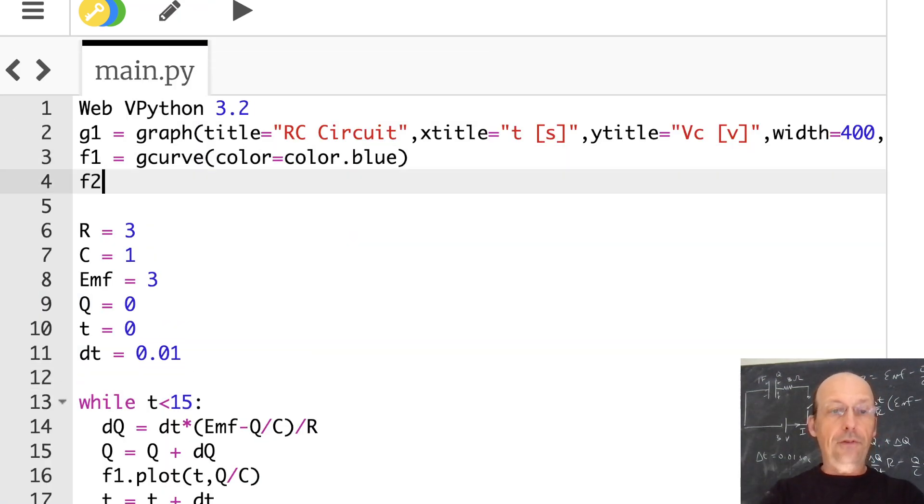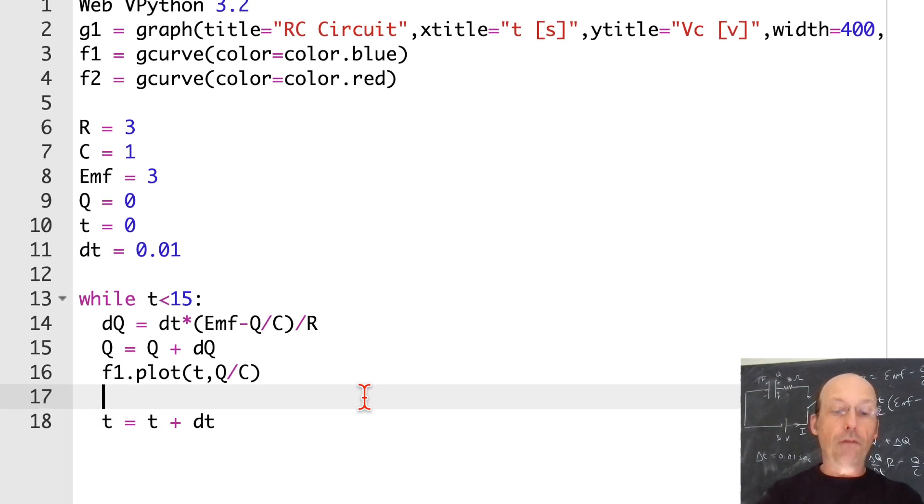F2 equals gcurve. Color equals color.red. Yeah, you can make two graphs. No problem right there. So I'm going to calculate VC. And this is going to be the theoretical VC. VC is going to be equal to, what is it? EMF. No. What did I say? It was EMF(1 - E^(-T/RC)). I don't know why I blanked out on that. That is right. And then as T gets very, very large, it goes to zero and it goes to EMF. That's right. Okay. And let's plot that. F2.plot T, VC.